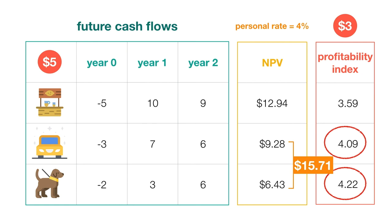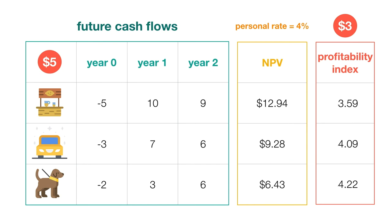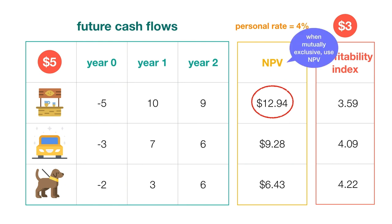But what if we can choose only one of these three investments? Suppose you only have room for one business headquarters on your front lawn, or you don't have enough friends to help you manage more than one business. In this case, we should choose to open the lemonade stand and earn $12.94, which is more than we could earn under the two other alternatives individually. Thus, when our options are mutually exclusive — meaning we cannot pick more than one — we prefer to use the NPV evaluation method to select the one investment option that earns us the most in absolute terms.